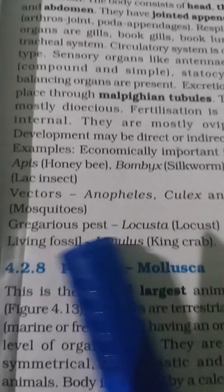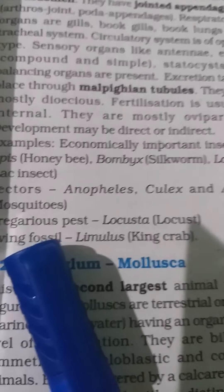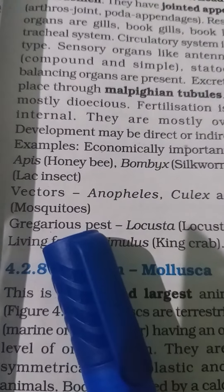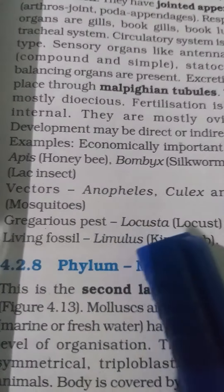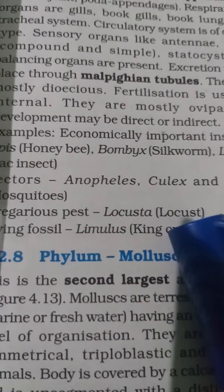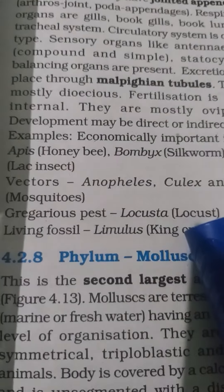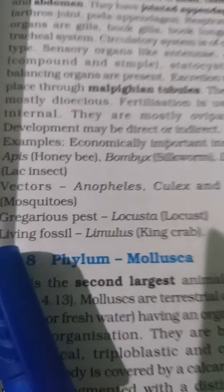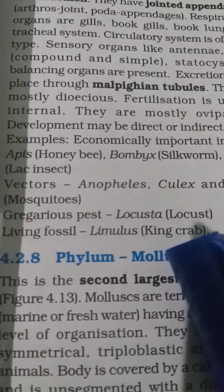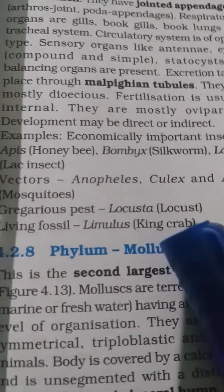Other mosquito vectors include Culex and Aedes mosquitoes. Arthropods also include pests that destroy crops, such as locust, and living fossils such as Limulus, known as the king crab.